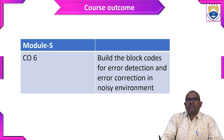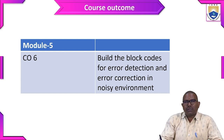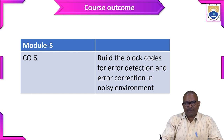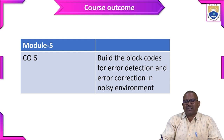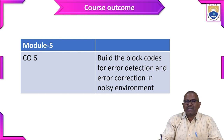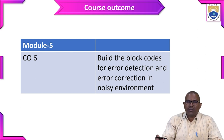By using both the block code and cyclic code we are going to detect the error and correct that error. So why are errors generated? This is due to noise. The transmitter sends signals into the channel, the signals travel through the channel and reach the receiver, and the receiver receives the noisy signal.